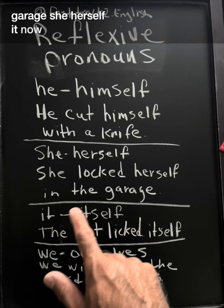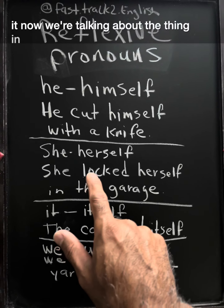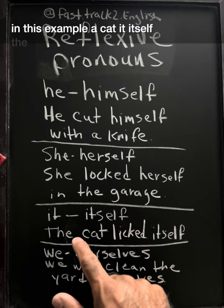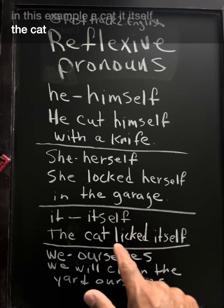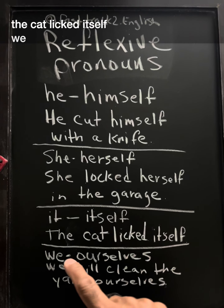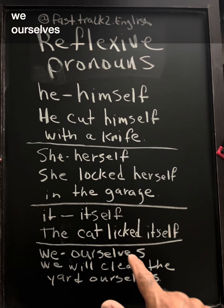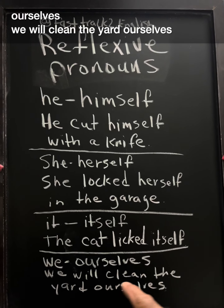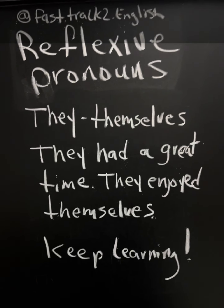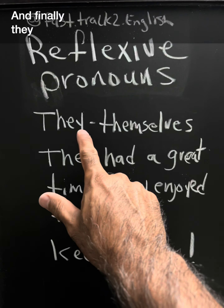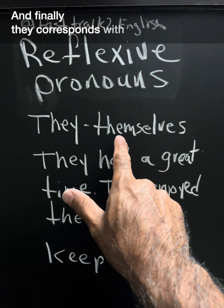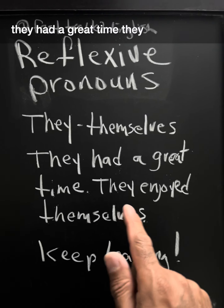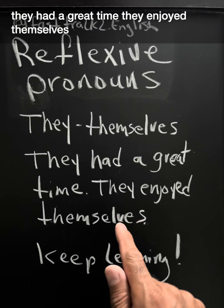It — now we're talking about a thing. In this example, a cat. It, itself: The cat licked itself. We, ourselves: We will clean the yard ourselves. And finally, they correspond with themselves. They had a great time — they enjoyed themselves.